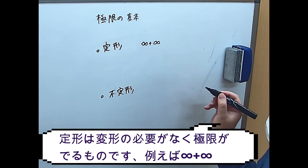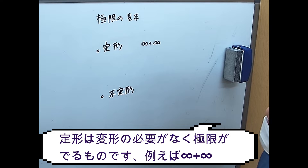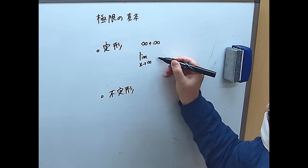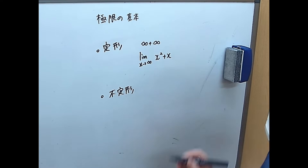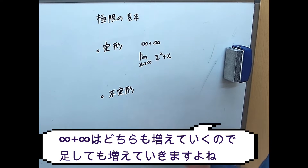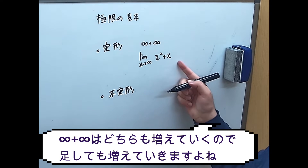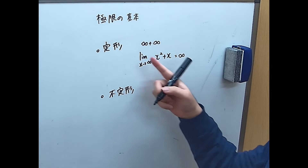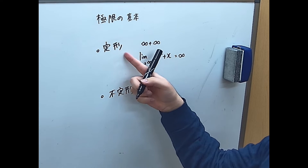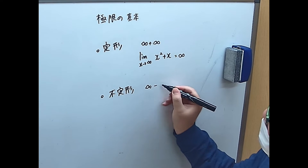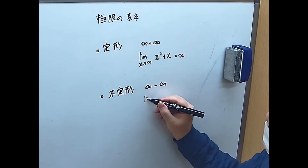定形というのは例えば「無限足す無限」みたいなやつが定形なんですよ。例えば lim(x→∞) の x²+x となると、これを別々に見ると無限と無限じゃないですか。なんだけど無限足す無限ってそもそも増え続けてるから無限でいいじゃんこれは、という感じです。変形しなくてもそのままできますよというのを定形と呼んでいます。不定形は逆にできないタイプのことをそういう名前で言うんですけど、例えば「無限引く無限」なんですが、これが引き算になったらどうなるかというと…